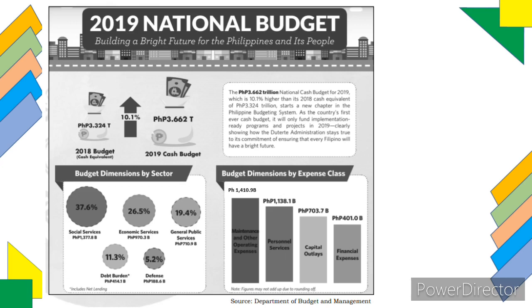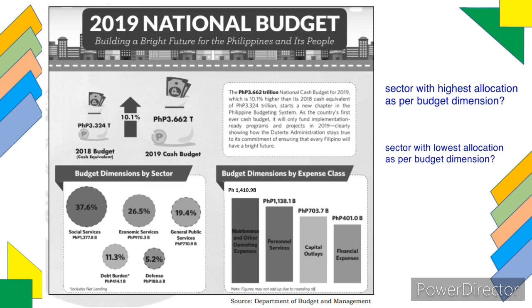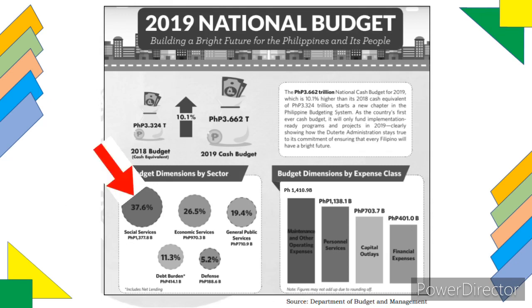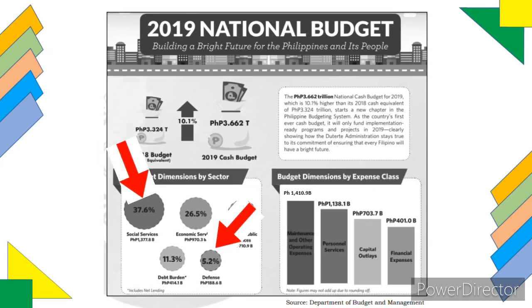Another question: which sector had the highest allocation as per budget dimension? How about the lowest allocation as per budget dimension too? Write your answer in the comment section. If you say that social services had the highest allocation and defense had the lowest allocation as per budget dimension by sector, then you're definitely right.